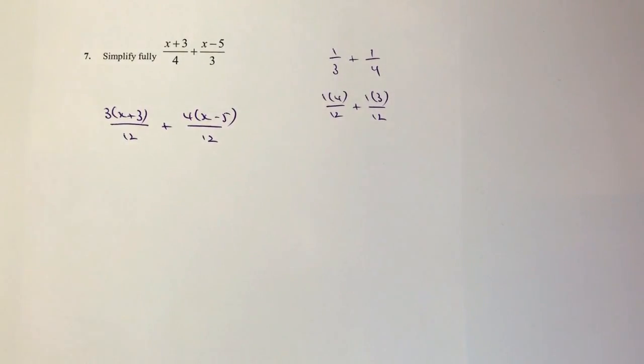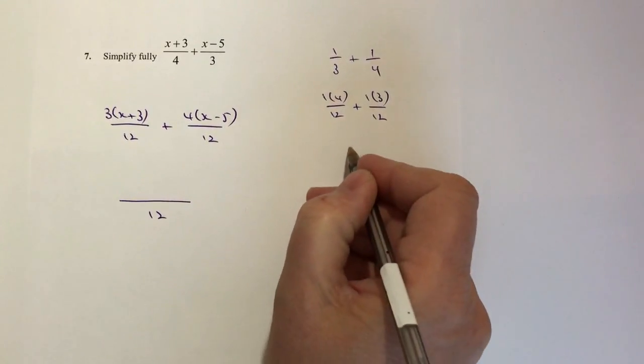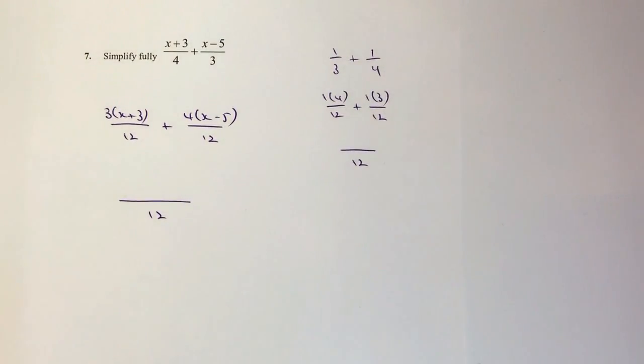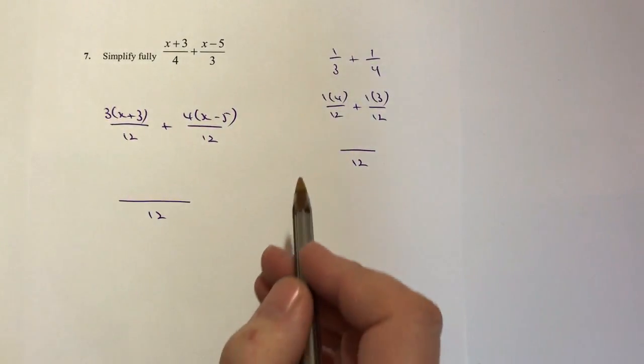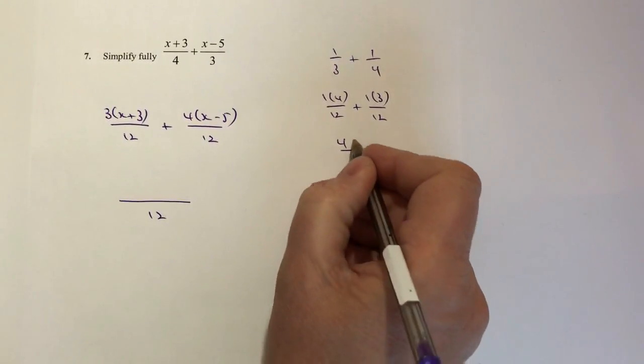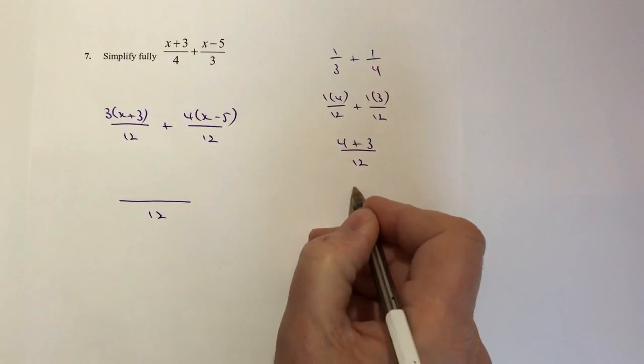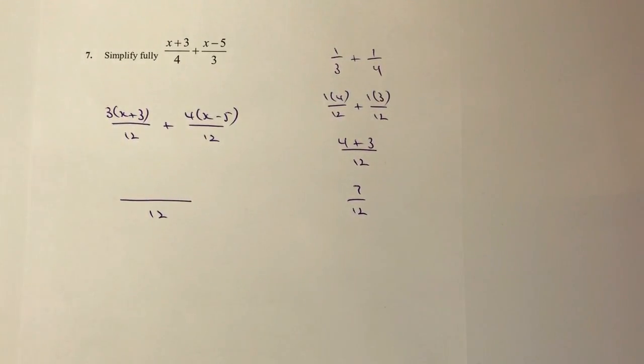Then it's a case of simplifying everything up. First I'm going to put both fractions together under 12, in the same way I would do with that particular one. Then I'm going to work out each of the different numerators. So 1 times 4 is 4, and 1 times 3 is 3. So 4 plus 3 is 7 over 12.